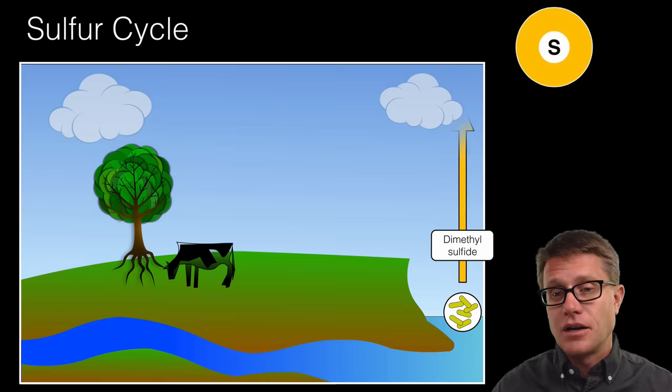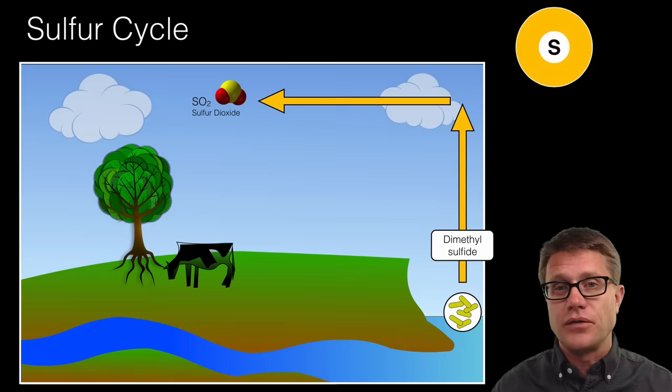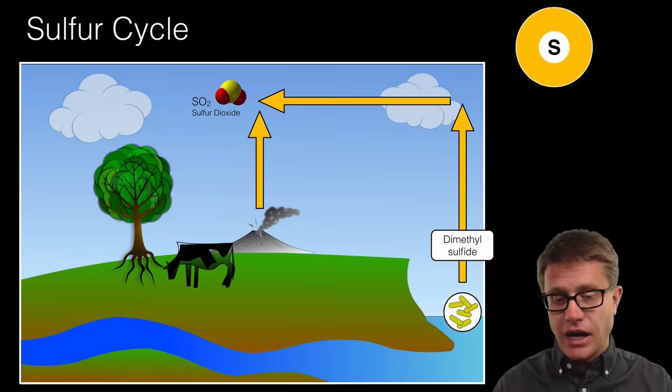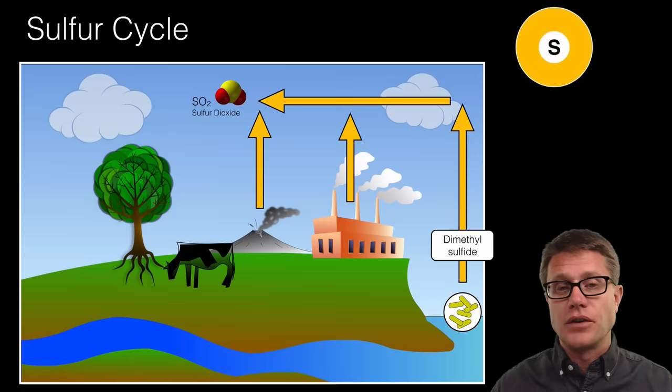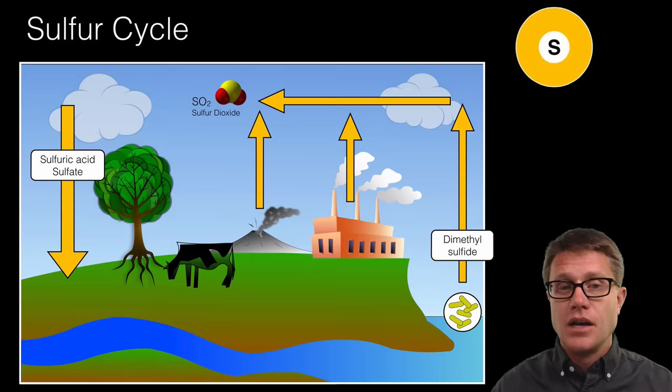And then finally we have the sulfur cycle. Sulfur cycle is going to move from the oceans, the sulfur. We have bacteria that are going to convert that into dimethyl sulfide which eventually becomes sulfur oxide or sulfur dioxide. We can also increase sulfur dioxide through volcanism. So volcanoes are releasing hydrogen sulfide which becomes sulfur dioxide. And then factories are going to release sulfur dioxide as well. It is in the atmosphere now. How does it get back to the planet? It is going to rain down as sulfuric acid and sulfates.